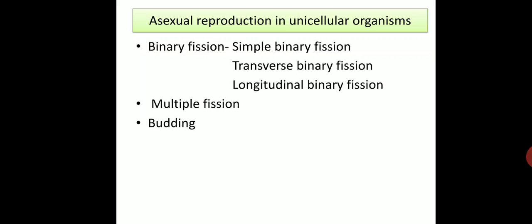We are going to discuss these methods in the next class with the help of examples. We will also cover multiple fission and budding. These three processes — binary fission, multiple fission, and budding — will be studied as asexual reproduction methods one by one in the next class.